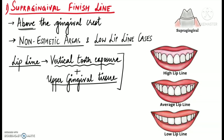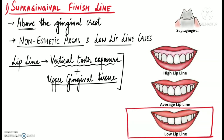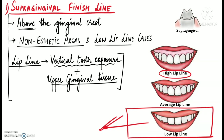A low lip line displays 75% or even less than 75% of maxillary anterior teeth with no display of the adjacent gingival tissues, as we can see here in this picture. Whereas a high lip line exposes almost all of the clinical crowns along with the adjacent band of gingival tissues, as we can clearly see in this picture.